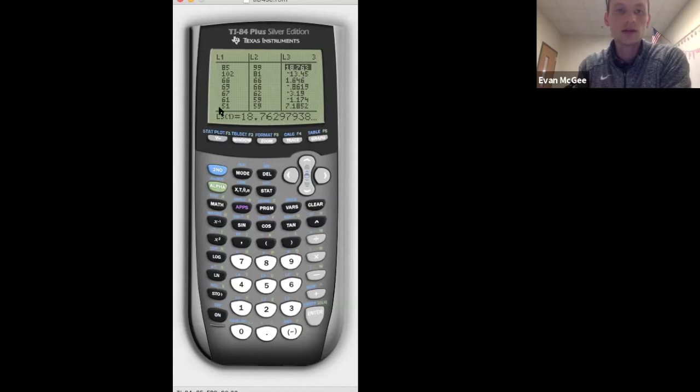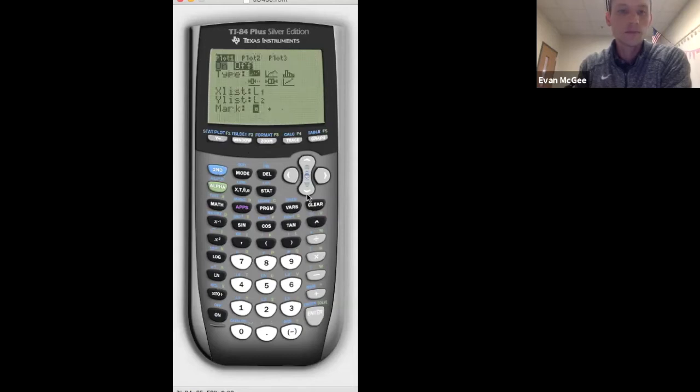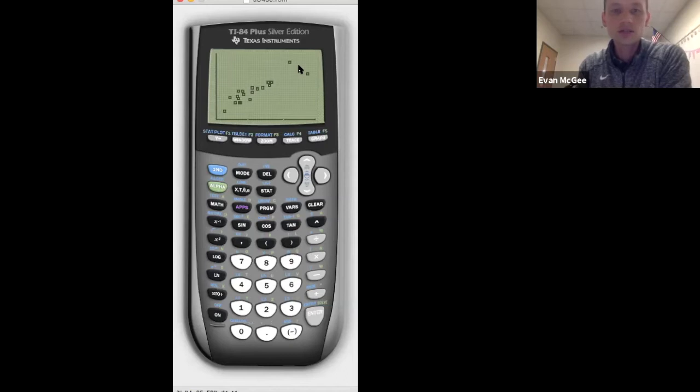So now all I have to do to make the residual plot is use list three as my y values and list one as my x values. So I'll go to my stat plot, second y equals, turn it on. The first option is the scatter plot. If I hit zoom nine now, it's going to show me list one and list two. That's going to be the regular, the original scatter plot. So let's take a look at that first. Zoom nine. There's my original scatter plot. Looks strong, positive, and linear.